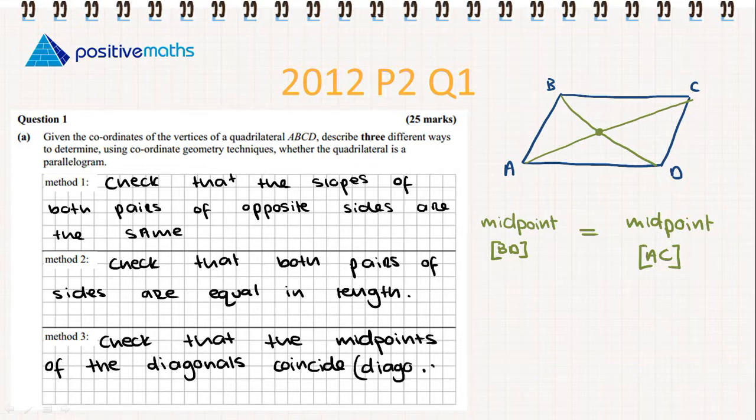We're checking that the diagonals bisect each other. So that's three methods to show that the quadrilateral is a parallelogram: check that the slopes of both sides are the same, check that the length of opposite sides are the same, and check that the midpoints of the diagonals are the same.